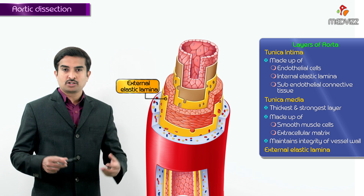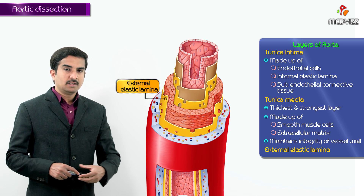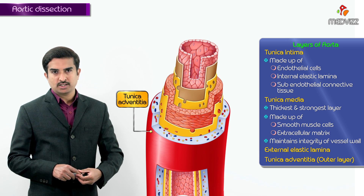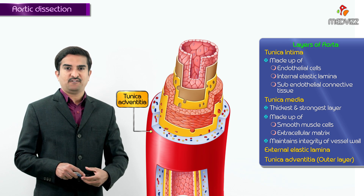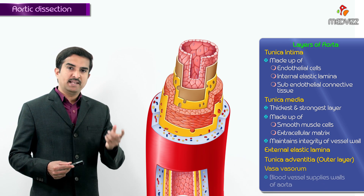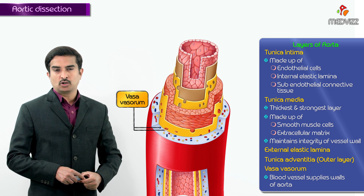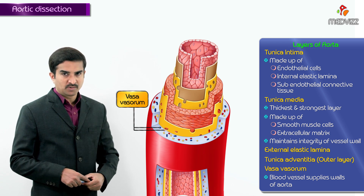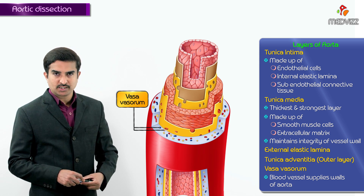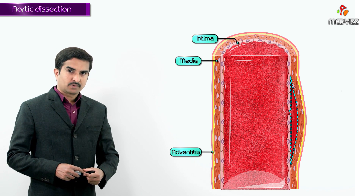After the media, we have an external elastic lamina, and after that the outer layer is called tunica adventitia. Above the tunica adventitia you can also identify the blood vessels that supply the walls of the aorta, called vasa vasorum. This is the normal anatomy of the aorta.